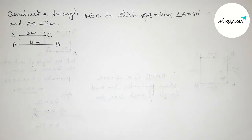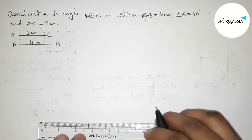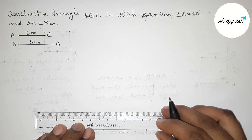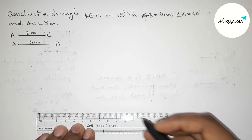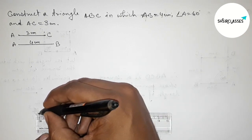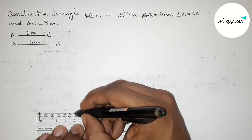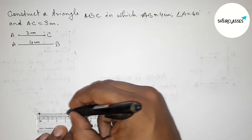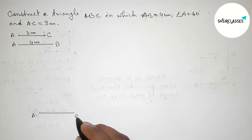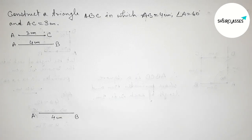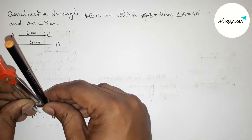Again, we draw line AB equals 4 centimeters. Starting from zero, this is the 4 centimeter line segment. Taking point A at the start and point B at 4 centimeters. So AB is 4 centimeters. Next, drawing a 60 degree angle at point A.